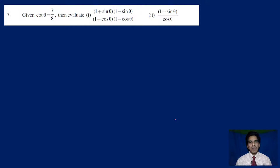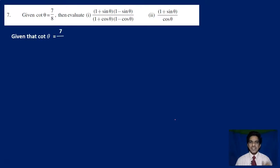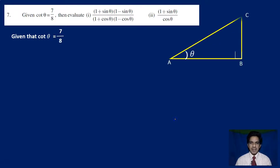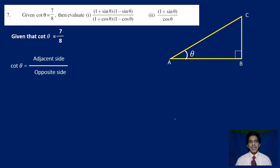If you have solved the problem, you will have been given a triangle. But here there is no mention of a triangle — we have the angle cot theta. So you have to draw your own right angle triangle. You can give it any name, but you have to take the given angle as theta. We are given that cot theta is equal to 7 by 8. Let us draw a right angle triangle ABC, with the right angle at B and angle A taken as theta.